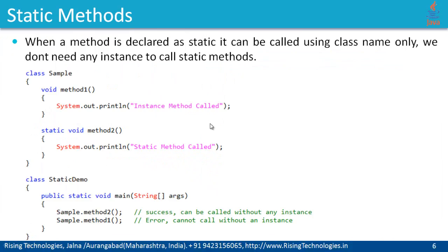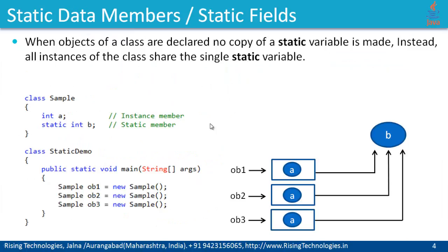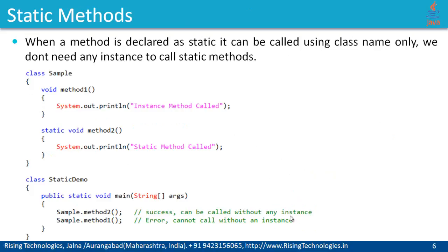So we have just learned the difference between static data members and static methods. Static data members belong to the class only and do not belong to a specific instance — there is only one copy shared by all instances. Non-static data members have a separate copy per instance. If you have a static method, we can call it by specifying the class name only. But in order to call a non-static method, we must have an instance of this class.